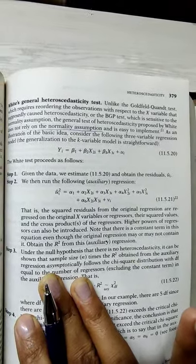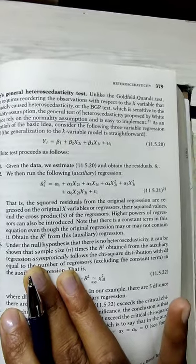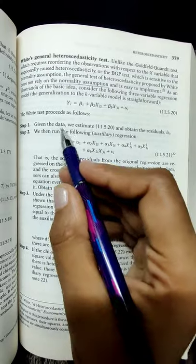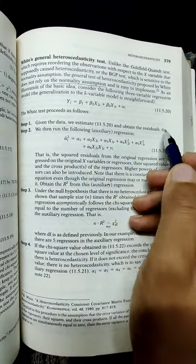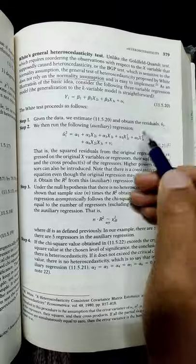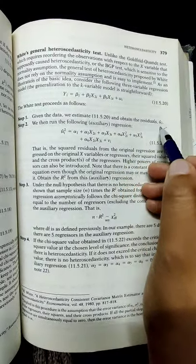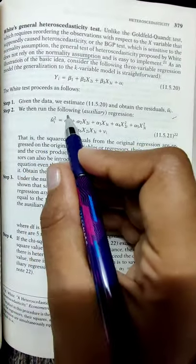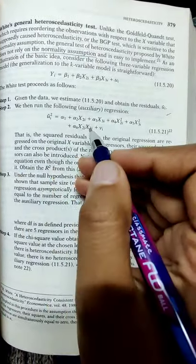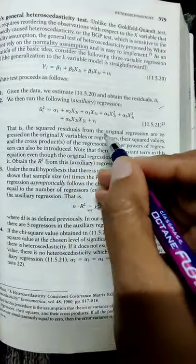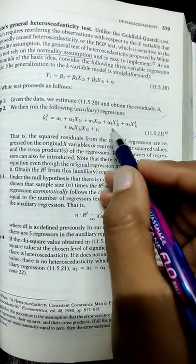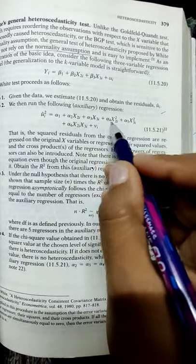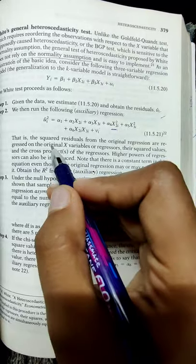Given the data, we estimate and obtain the residuals ui hat. That's the first step we do in every test - estimate and obtain residuals ui hat. Second step: we run the following auxiliary regression. Auxiliary regression means you take square terms as explanatory variables - so X2 and X3, their square values, and also their cross product values.